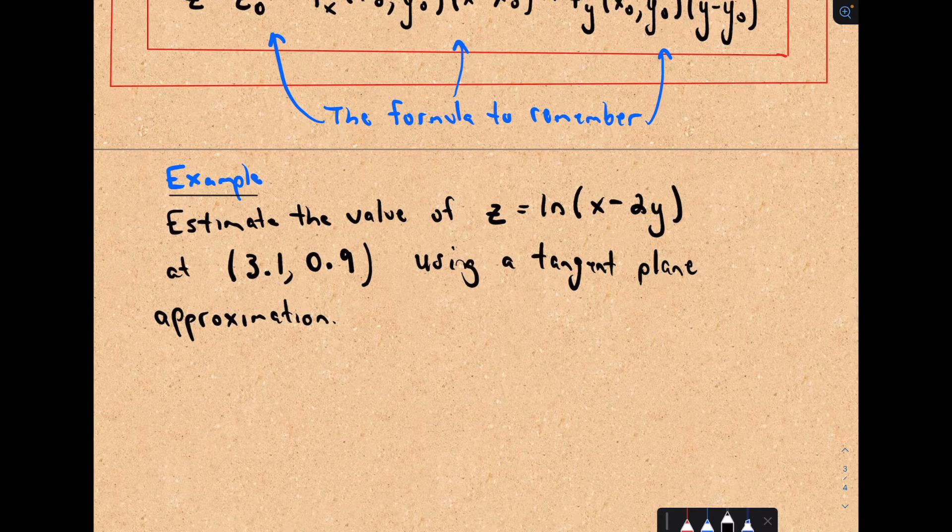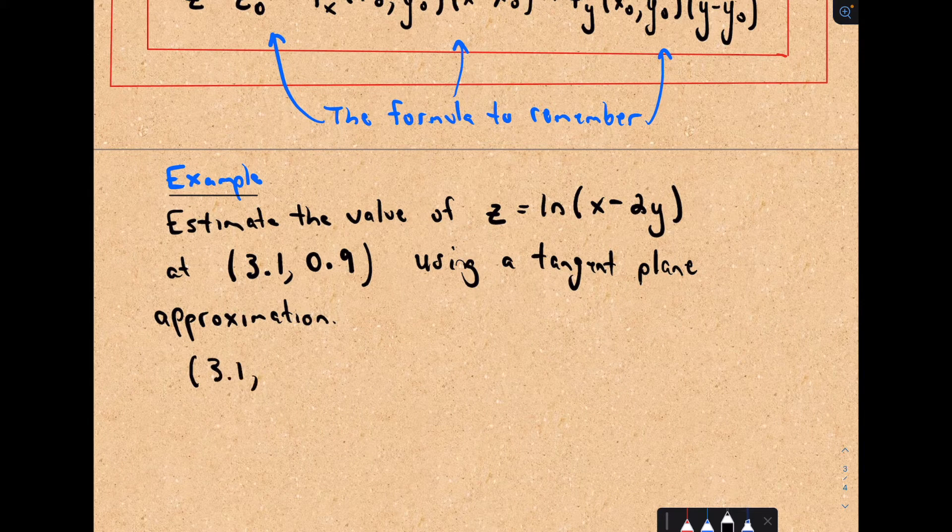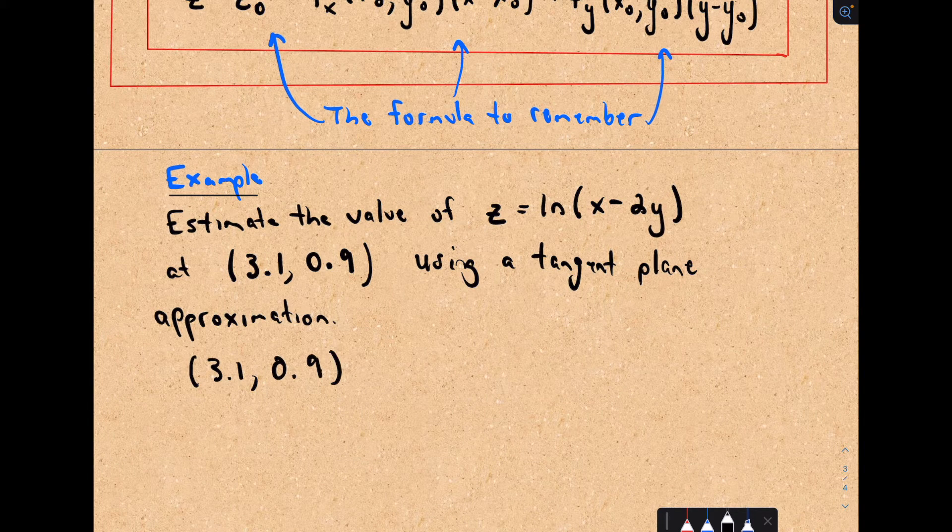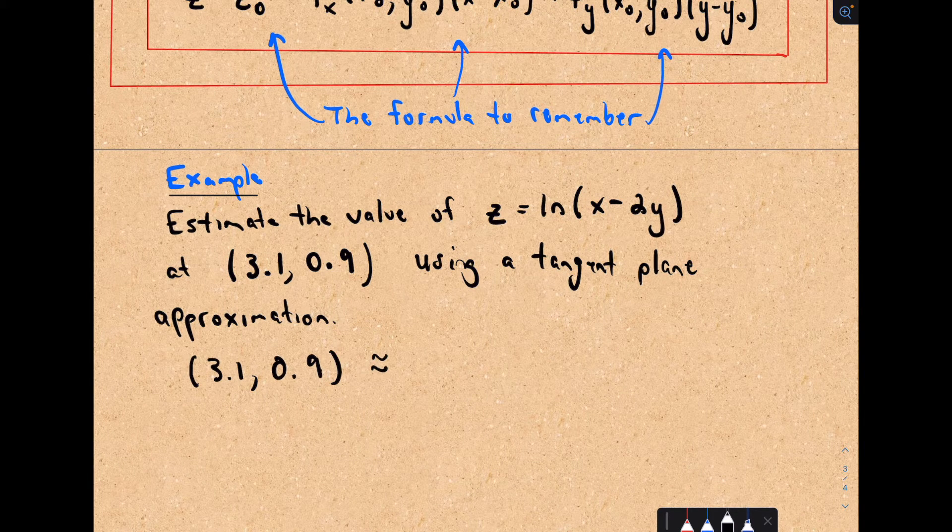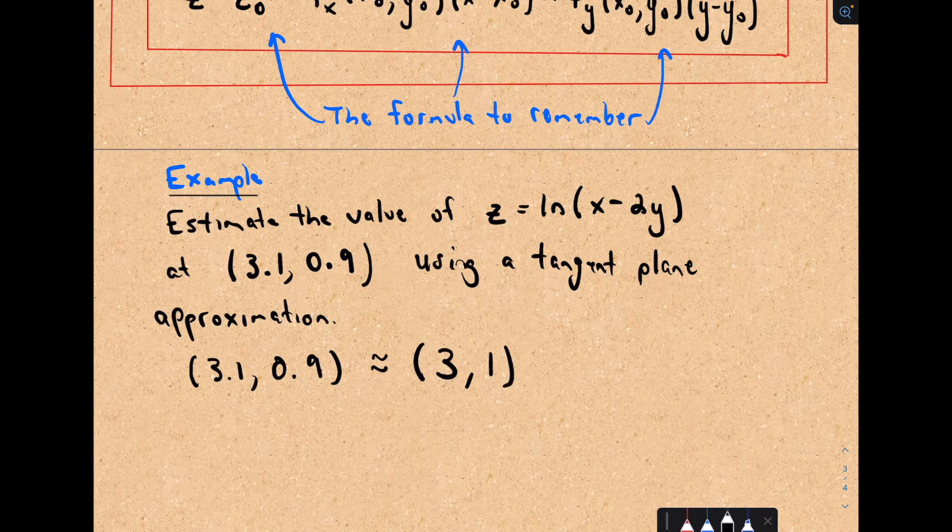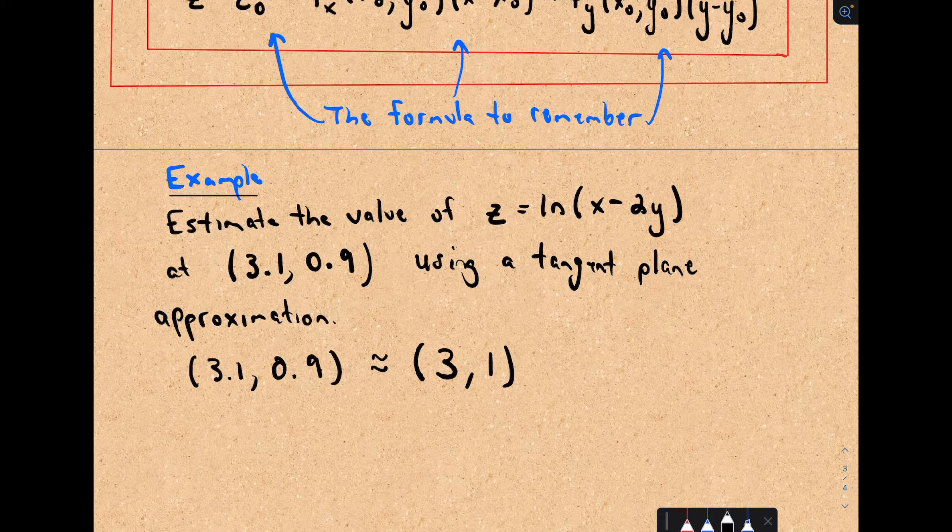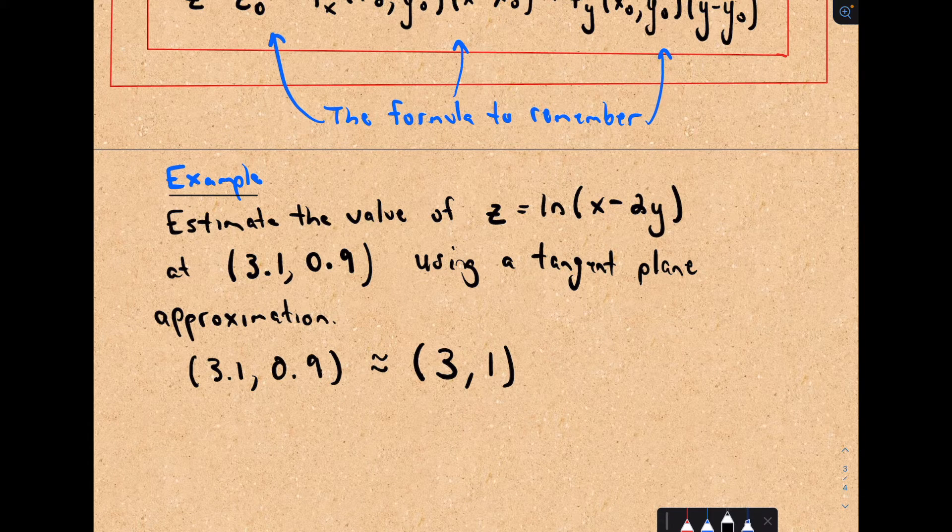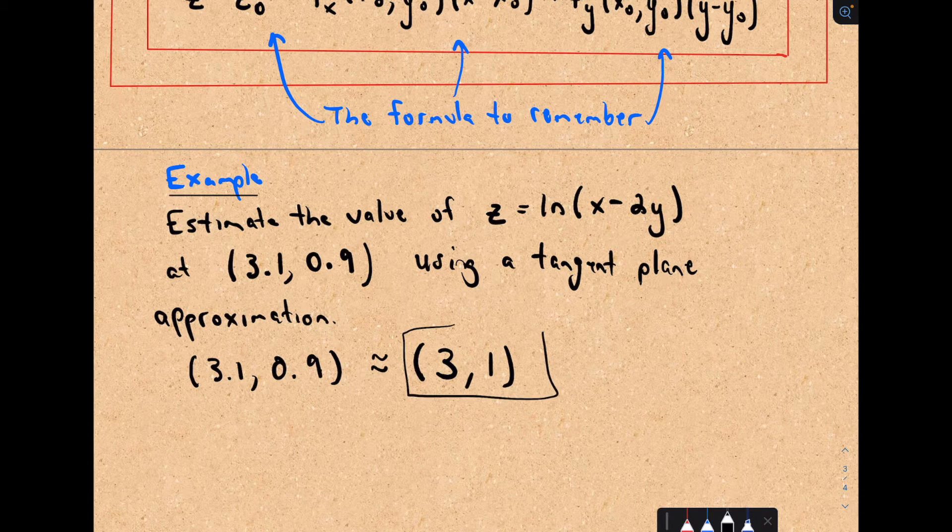So I'm going to say, well, 3.1 and 0.9, that's pretty close to the x coordinate of 3 and the y coordinate of 1. So that's what I'm going to plug in. That's where I'm going to find the tangent plane approximation at.